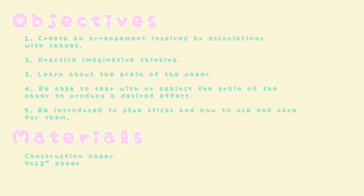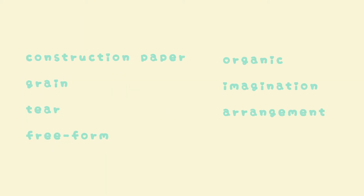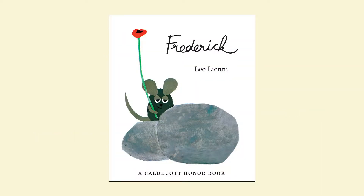While tearing paper, we will create an arrangement inspired by associations with shapes, practice imaginative thinking, and learn about the grain of the paper. We will be able to tear with or against the grain to produce a desired effect. Materials include construction paper and 9 by 12 paper. Vocabulary: construction paper, grain, tear, freeform, organic, imagination, and arrangement. Can you guess how Frederick was created by tearing?